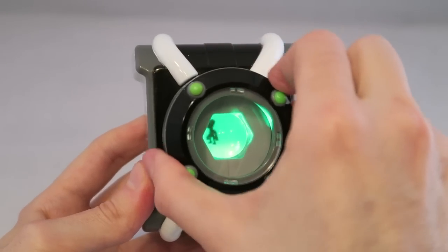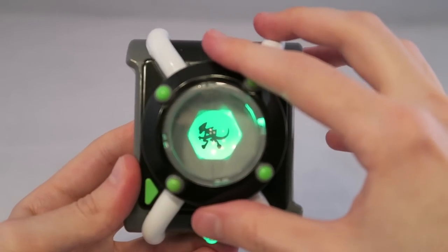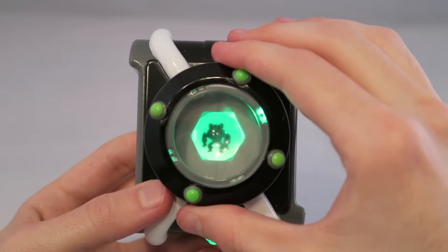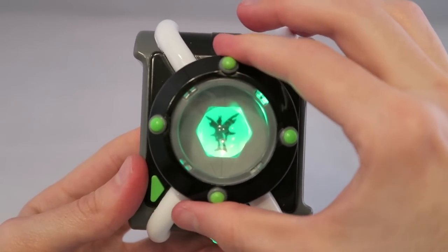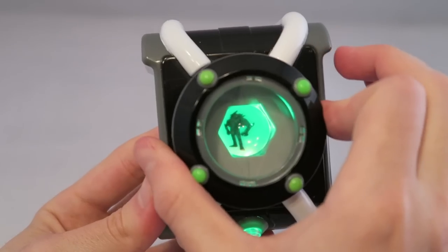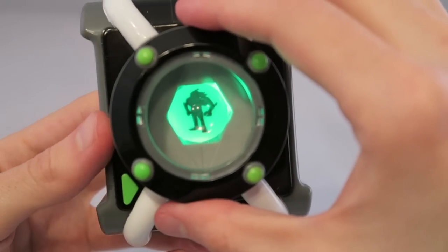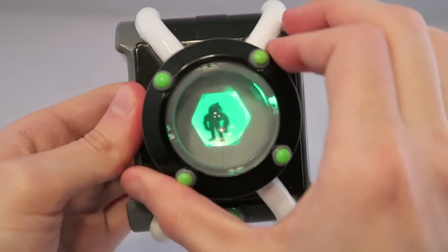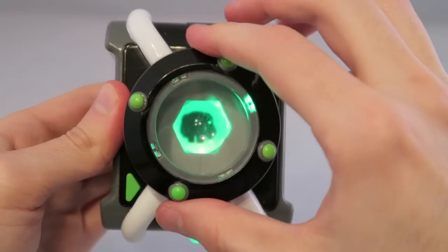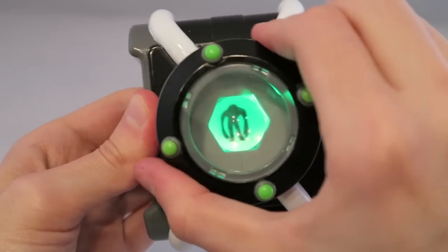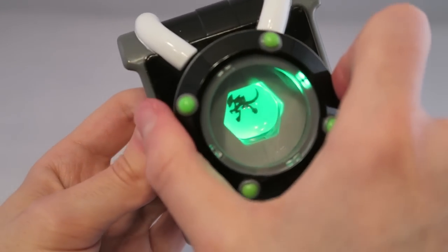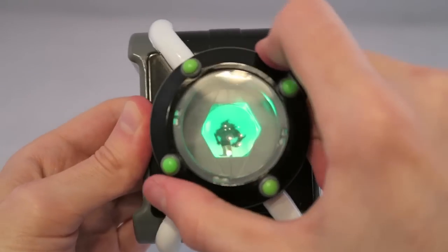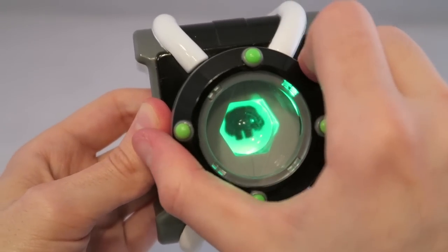It's hero time! So you can move it around. It'll make that noise, and you can see all the aliens. There's Overflow, Diamond Head, Wildvine, Blitz Wolf, Heat Blast, Cannon Bolt, Forearms, Upgrade, Grey Matter. I'm gonna set it to Forearms just because that's kind of where I wanted to start it.